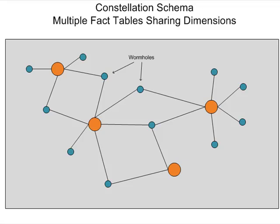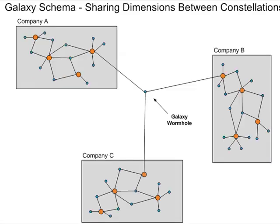So the next step up from that is the galaxy schema. And here you see a galaxy schema, which is where multiple companies all have their own individual constellations, their own individual warehouses. And you can actually see by using galaxy wormholes—in this case where companies can share dimensions—if three different companies in my example all were able to use the same exact dimension, they would be able to use that wormhole to join their data together.